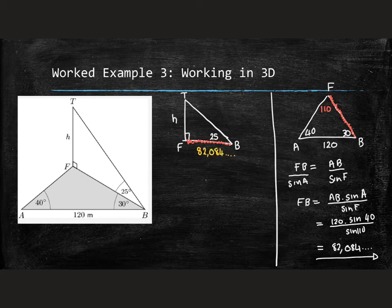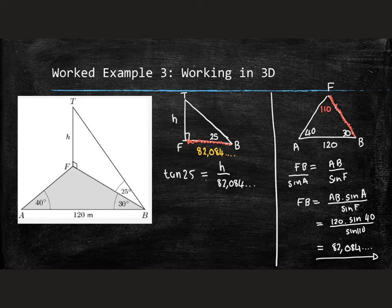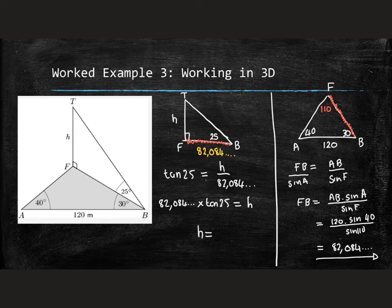Transfer FB into the right-angle triangle. The only angle we know there is 25 degrees. Standing at the 25-degree angle, we have an opposite H and adjacent FB. So tan 25 equals H over FB. Therefore H equals 82.084 times tan 25, which gives approximately 38.246, rounding to 38 meters as the height of the pole.